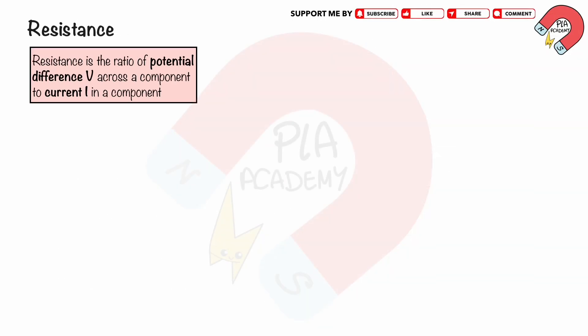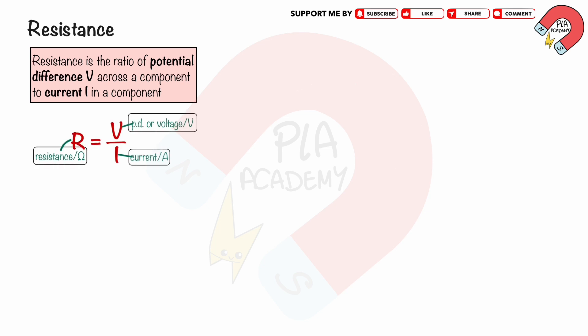Resistance is the ratio of potential difference V across a component to current I in a component. We can write the formula of the resistance as R equals V divided by I, where R is the resistance in ohms, V is the PD or voltage across the component in volts, and I is the current in amperes. 1 ohm is equivalent to 1 volt per ampere.